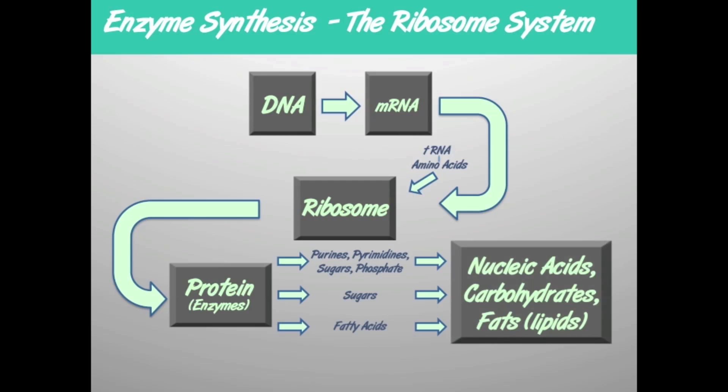Other enzymes produce different sugars that are formed into carbohydrates. Different fatty acids are produced by enzymes to form the lipids. So all living forms are made up of proteins, nucleic acids, carbohydrates, and lipids. For this system to function, you have to have all of the molecules present.